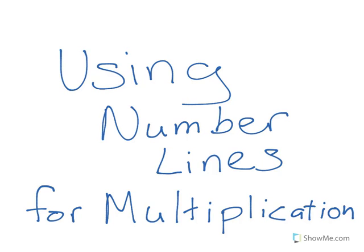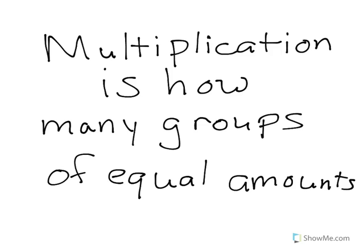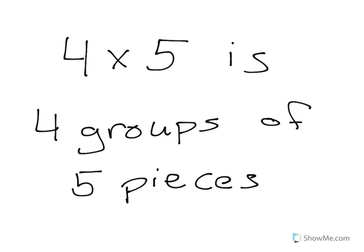Using number lines to solve multiplication problems. Multiplication is figuring out how many groups of equal amounts you have. So, for example, it might be 3 times 3 or 4 times 4, and you know that if that's the case, you've got 4 groups and there's 4 pieces in each group.